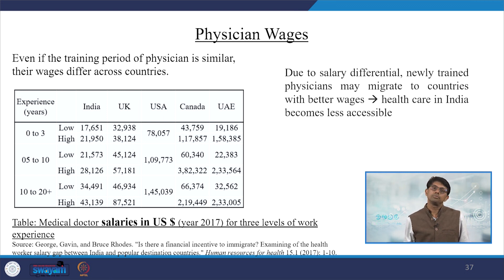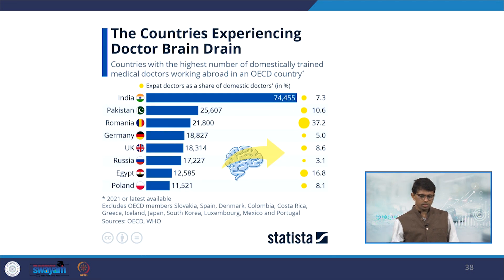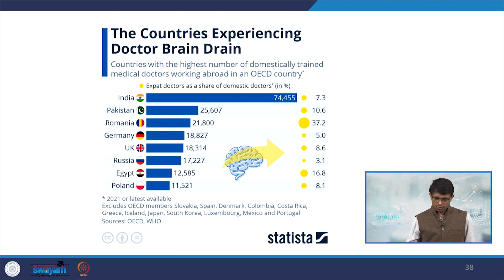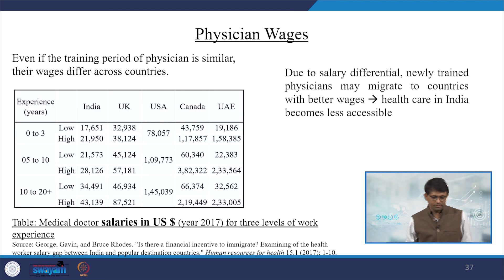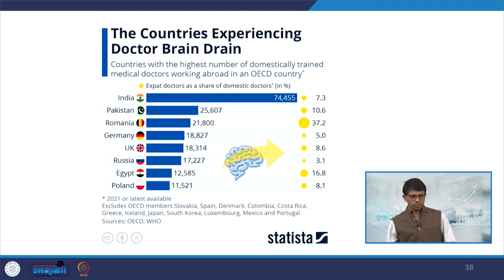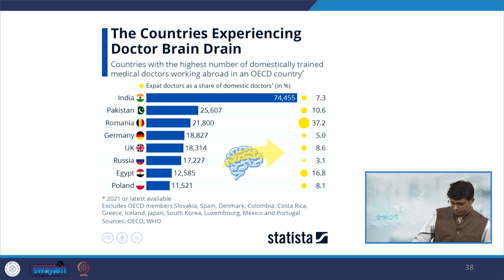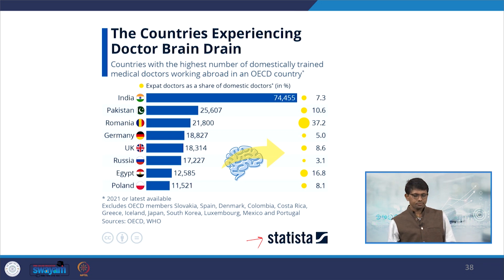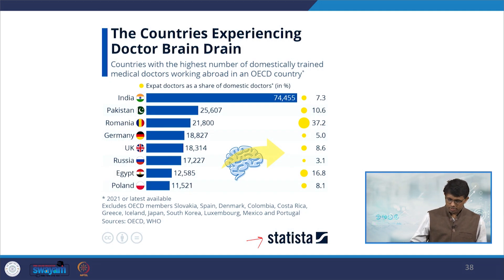Physician wages differ across countries even when training is similar, and supply induced demand varies due to salary differentials. Newly trained physicians may migrate to countries with better wages — brain drain. Healthcare in India becomes less accessible due to brain drain. Data from Statista (2017) shows India's physician wages in PPP-adjusted US dollars are much lower than in the UK, US, Canada, and UAE, hence doctors prefer to migrate to countries where they earn better.